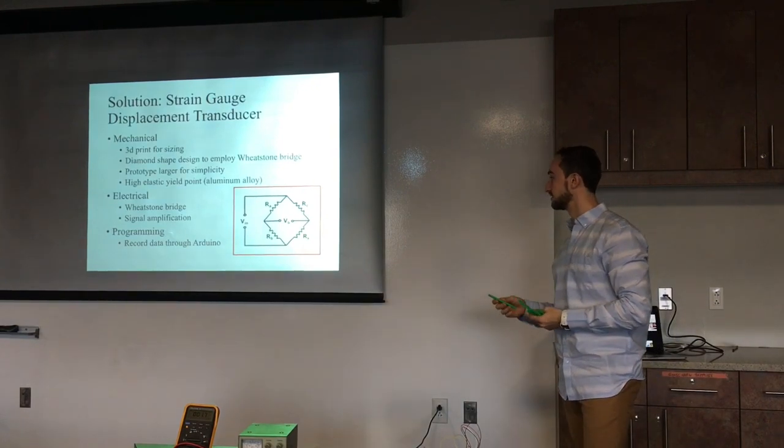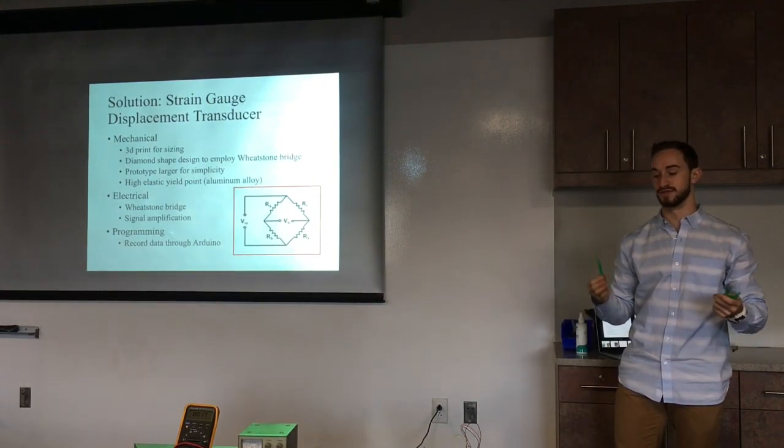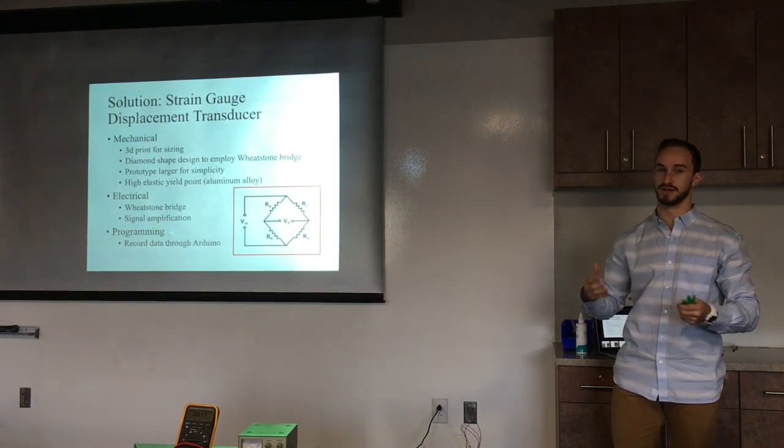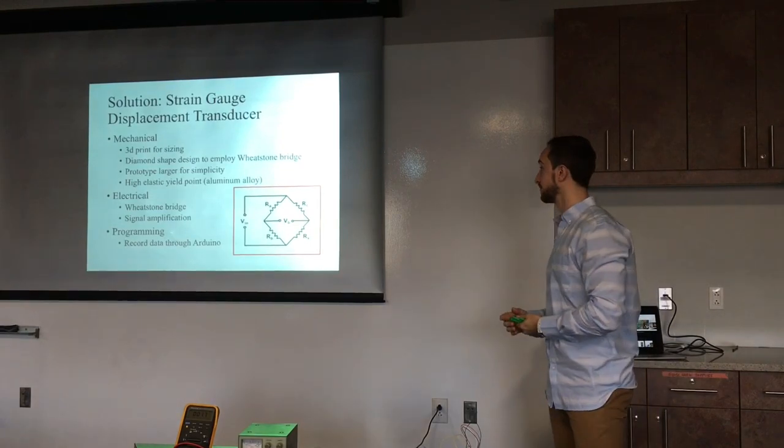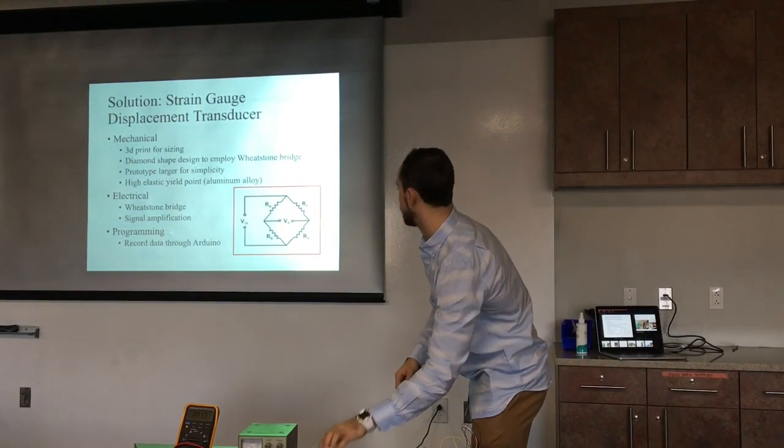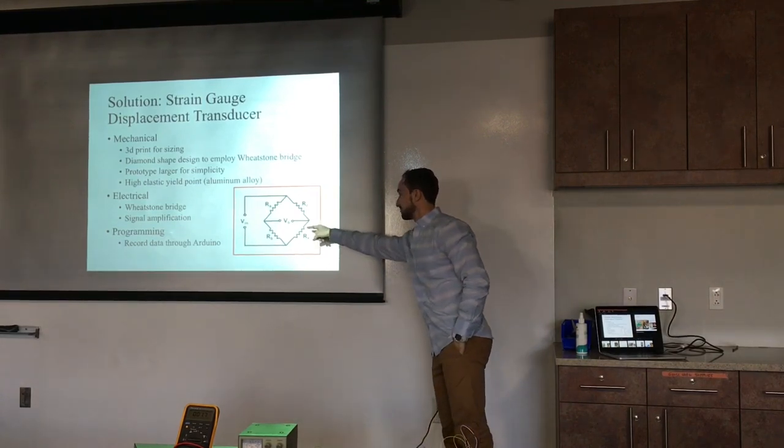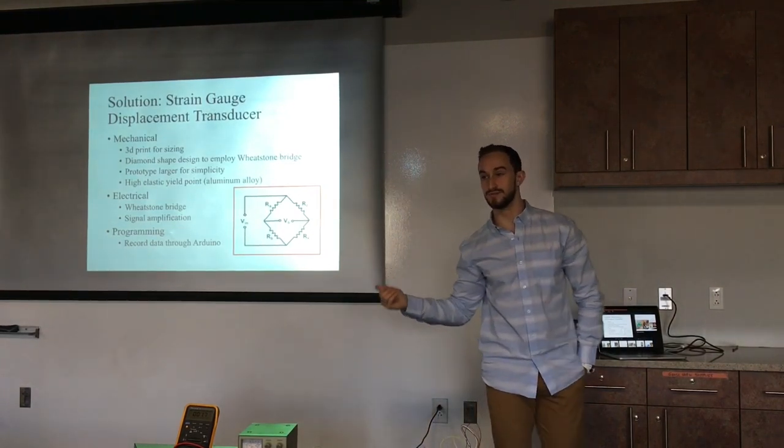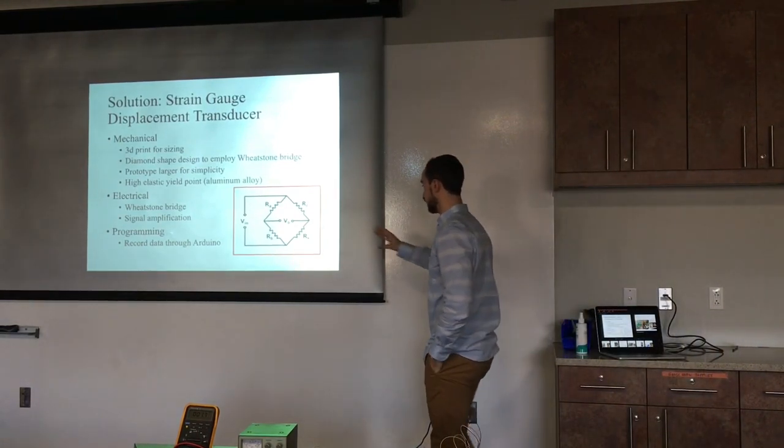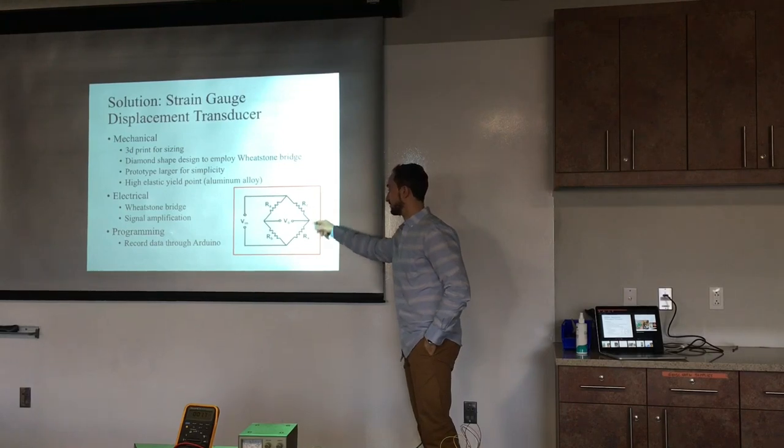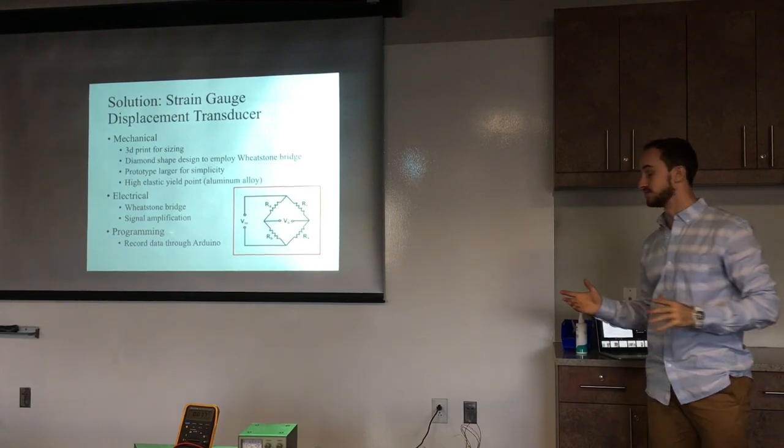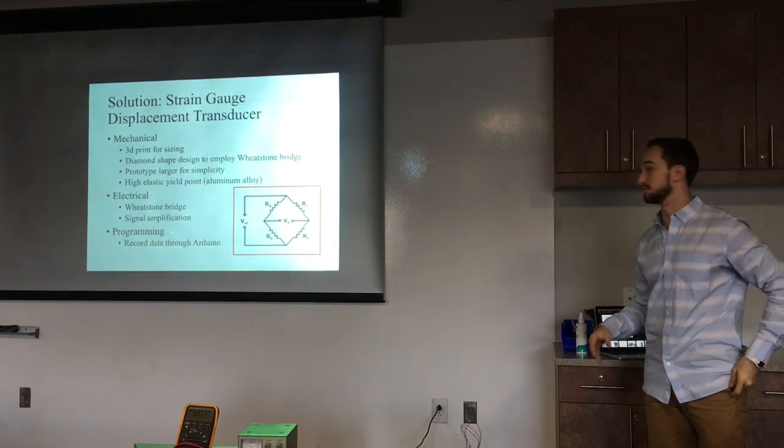This at least allowed us to get an idea of sizing, make sure that everything would fit, everything would work, before we then spent the money at the machine shop to try and actually get the metal parts in. So we wanted to employ a diamond design, and that is pretty much exactly similar to the Wheatstone bridge, so that we could use that Wheatstone bridge. It just makes it a lot easier when we then are able to use the Wheatstone bridge, a full bridge to be able to balance the two parallel aspects of the resistors. So that way we can actually get an accurate reading, hopefully without too much complexity with it.